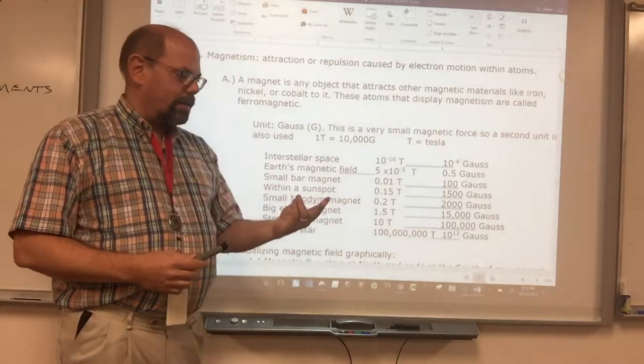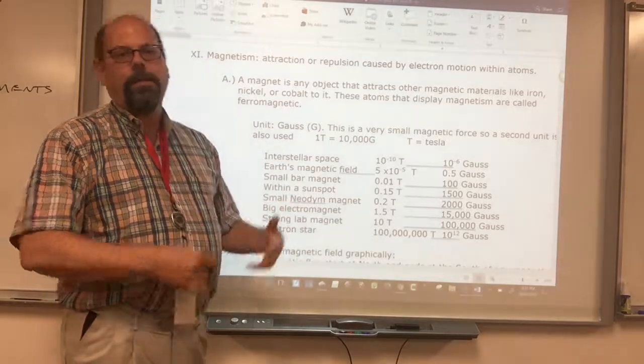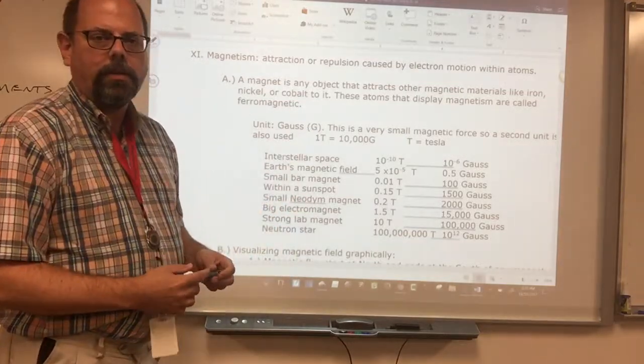For our planet, it's got iron and nickel as the core, a little bit of cobalt too, but those create the magnetic field that goes around the planet.